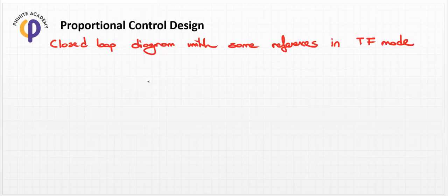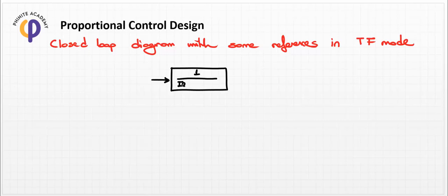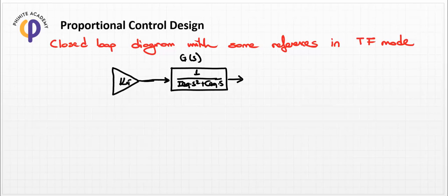If we have a system like 1 divided by (Ix times s-squared plus Gx times s), this is our plant. We can use the summary of the G(s) value. If we use a proportional control design, we need to add a gain factor kp in order to decrease or minimize the error in this setting.